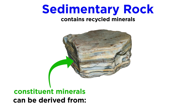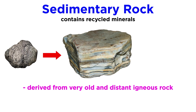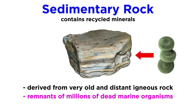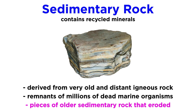Sedimentary rocks are diverse in that their constituent materials can be derived from essentially anywhere, any type of rock, and from any era. The minerals in a sedimentary rock could be derived from a one billion year old igneous rock that was broken down and transported thousands of kilometers, or they may be the remnants of millions of marine organisms that died and sank to the bottom of the sea, such as with the White Cliffs of Dover. Another possibility is that minerals are pieces of an even older sedimentary rock that eroded away and was deposited somewhere else.